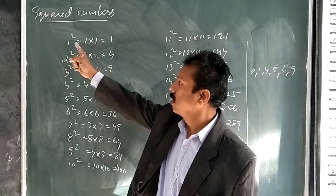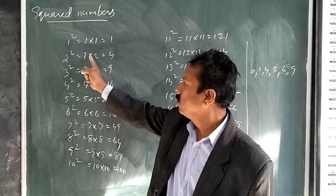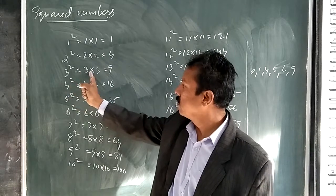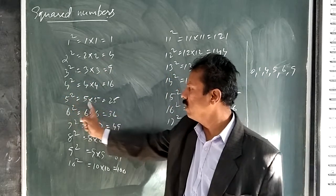1 squared, 1 raised to the power of 2, that is 1 into 1 equals 1. 2 square, 2 into 2 equals 4. 3 square, 3 into 3 equals 9. 4 square, 4 into 4 equals 16. 5 square, 5 into 5 equals 25.